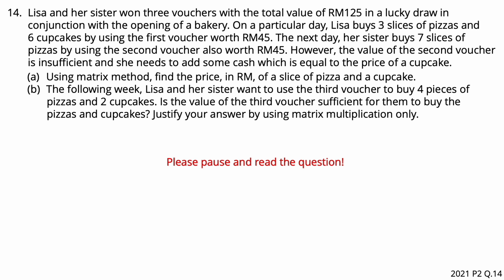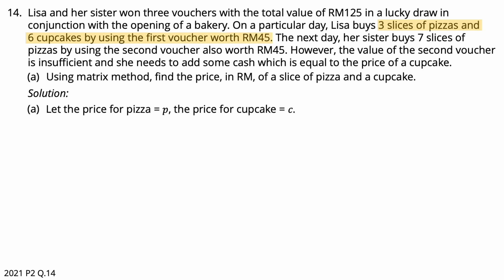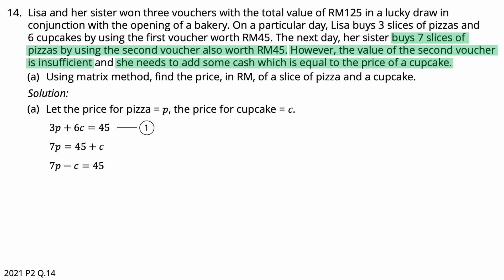Question 14: Using the matrix method, find the price in Ringgit Malaysia of a slice of pizza and a cupcake. Let P equal the price for pizza and C equal the price for cupcake. Lisa buys 3 slices of pizza and 6 cupcakes using the first voucher worth RM45, giving equation 1: 3P + 6C = 45. Her sister buys 7 slices of pizza using the second voucher also worth RM45, but it is insufficient — she adds cash equal to the price of one cupcake, giving equation 2: 7P − C = 45.